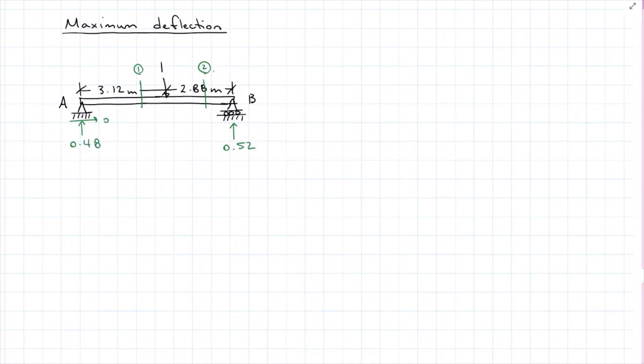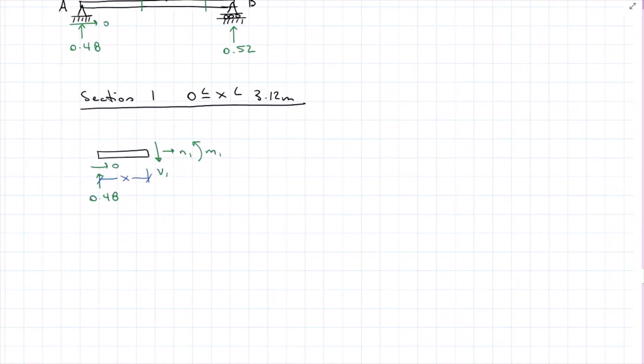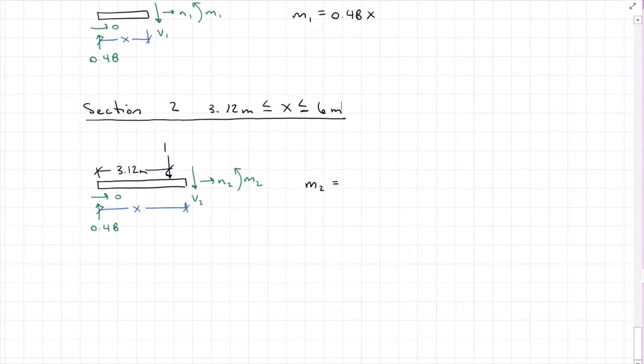Again, our actual moment equation for the loaded system does not change. Only thing that's changing here is the virtual. For my first section that represents zero to up to 3.12 meters, I have a moment equation 1 is 0.48 x. After setting up our second free body diagram, just after the unit load where we're looking for that deflection, in this case, the maximum deflection, we find that M2 is equal to 0.48 x minus 1 times (x minus 3.12), which reduces down to 3.12 minus 0.52 x.